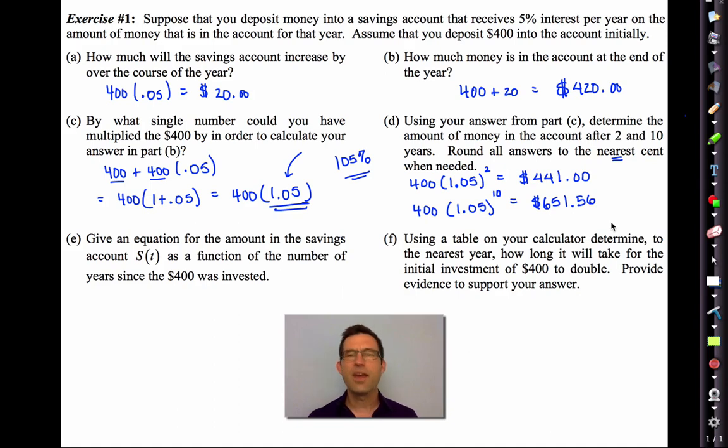Now let's put this into an equation. Letter E. Give an equation for the amount in the savings account, S(T), as a function of the number of years since the $400 was invested. Well, this is simple enough. We always have that $400, that y-intercept, times 1.05 raised to the T. That's exactly what we had here, where T was 2 and T was 10.